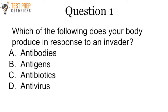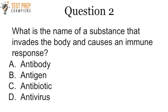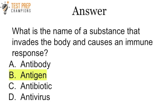Now for another pop quiz. Which of the following does your body produce in response to an invader? The answer is antibodies — remember that antibodies are produced in response to an invader. The next question: what is the name of a substance that invades the body and causes an immune response? The answer is antigen. The body makes antibodies in response to antigens, which are the foreign invaders that enter your body and trigger an immune response.